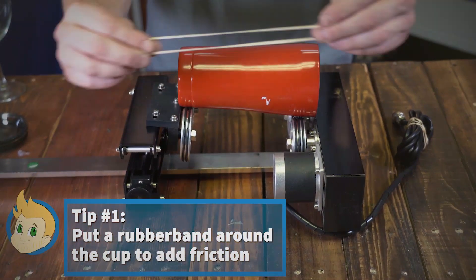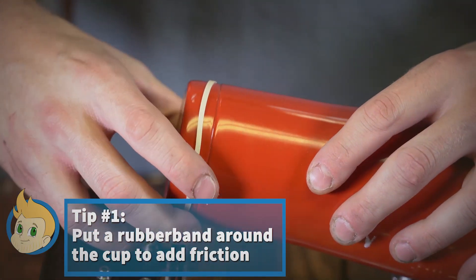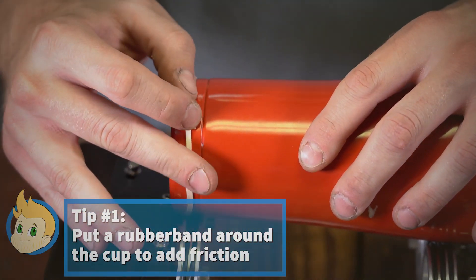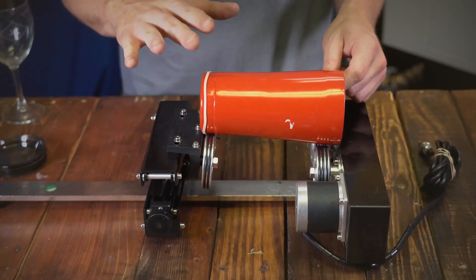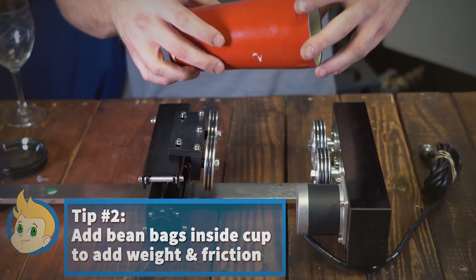You can add rubber bands to add friction. If that doesn't work, then you can always add a bean bag inside to create weight.